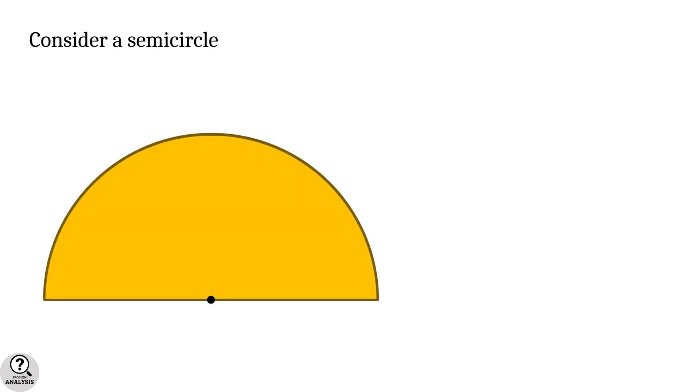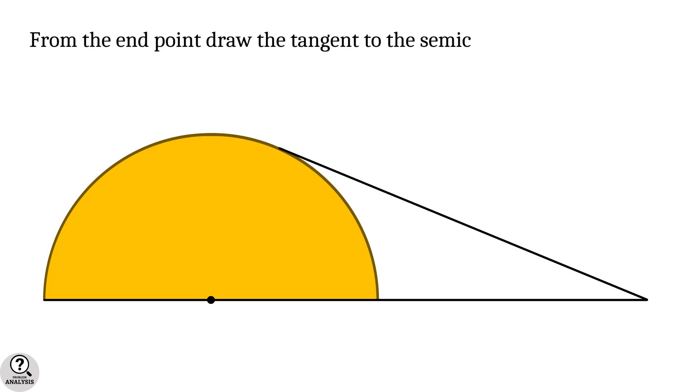Consider a semicircle and extend the diameter to the right side. From the end point, draw the tangent to the semicircle. The angle made by this tangent is 20 degrees.